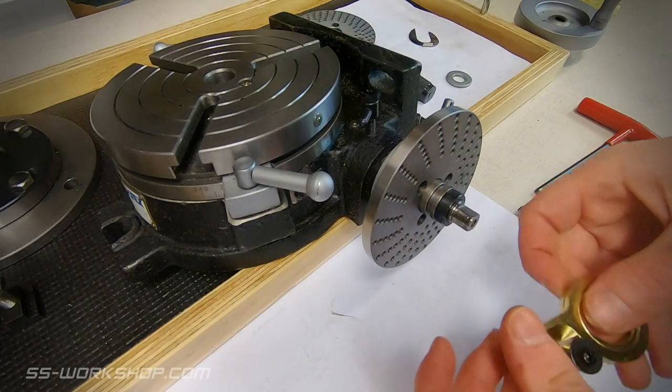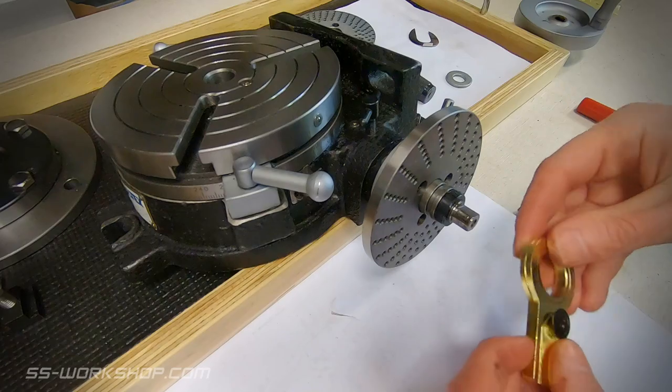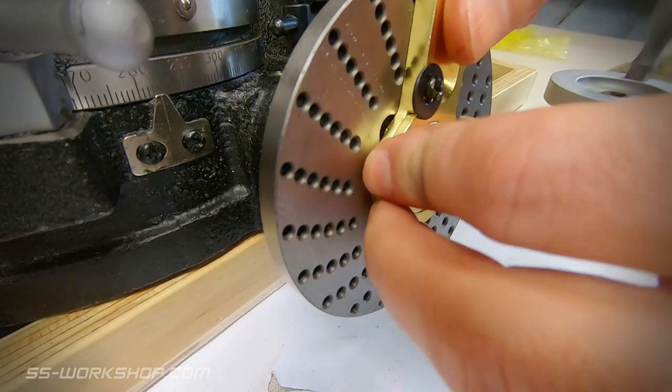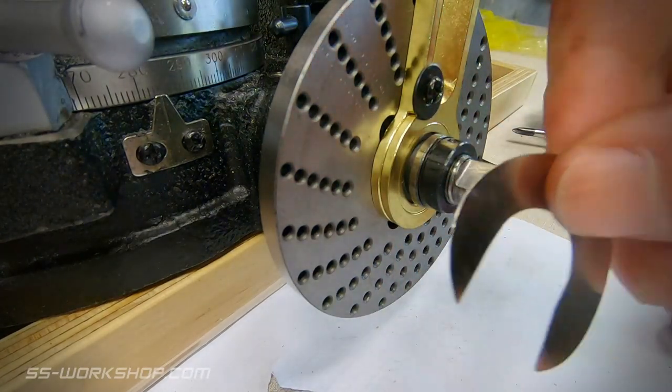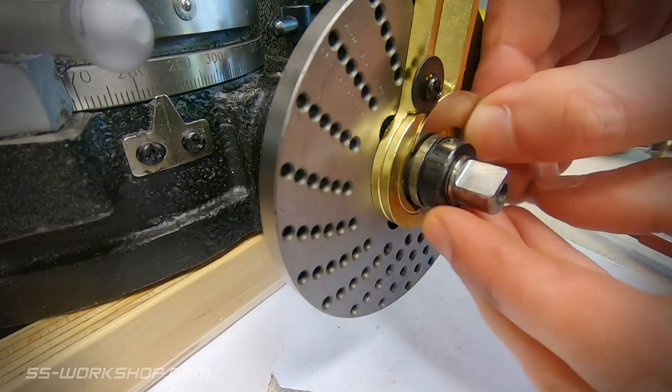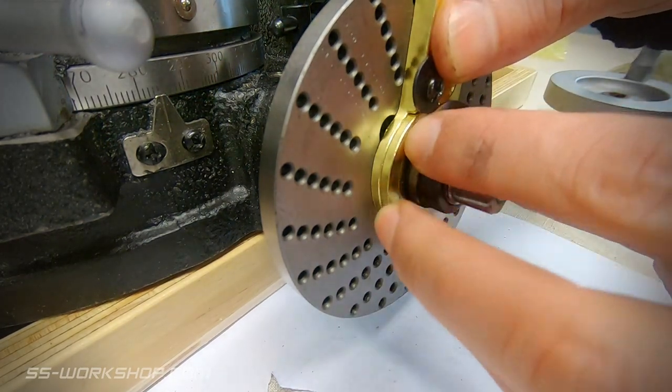Next part to install are the selector arms. These help with selecting the correct number of holes and just slip on to the shaft. The retaining clip is then slid into place on a groove in the shaft.